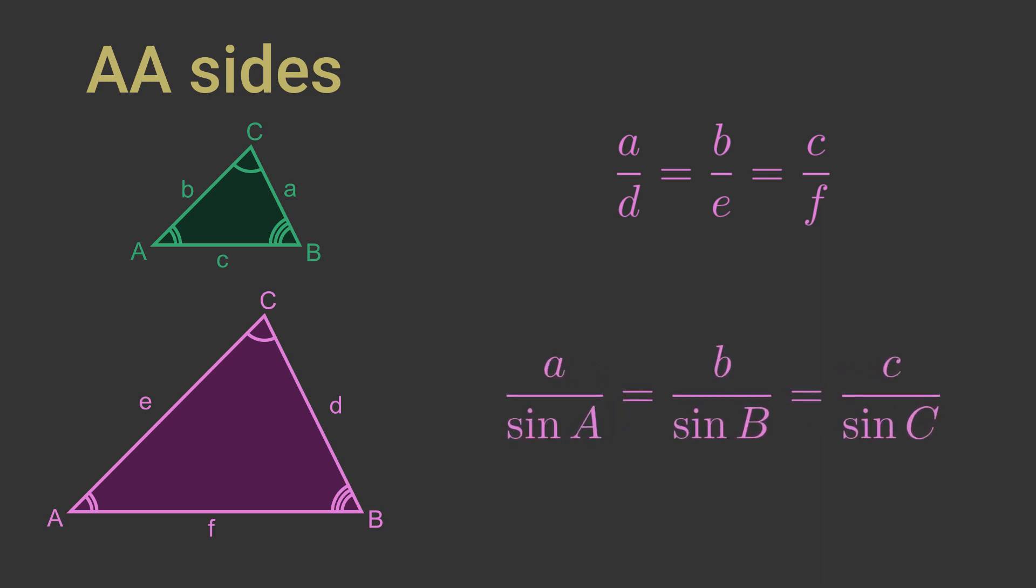The sine rule tells us that A over sine A equals B over sine B equals C over sine C. Since the two triangles have the same angles and we are looking for a proof involving ratios this looks like a promising place to start. Taking just the A and B parts of the sine rule, A over sine A equals B over sine B. This can be rearranged as A over B equals sine A over sine B.